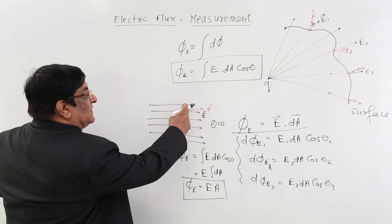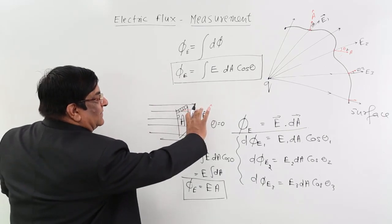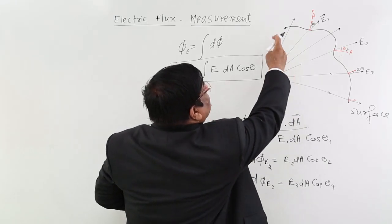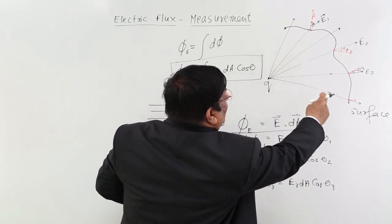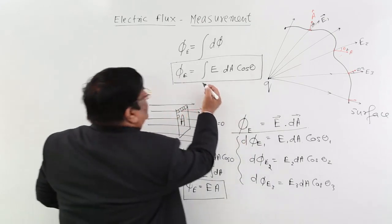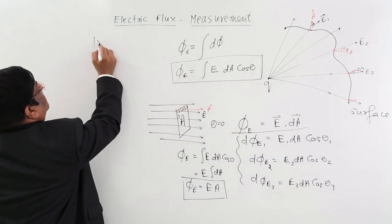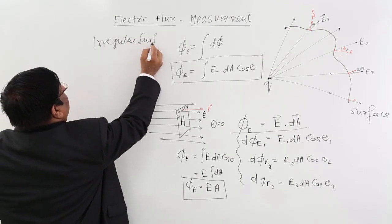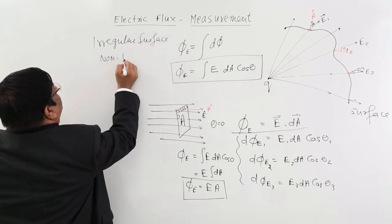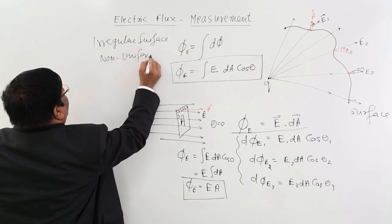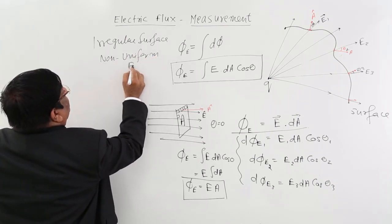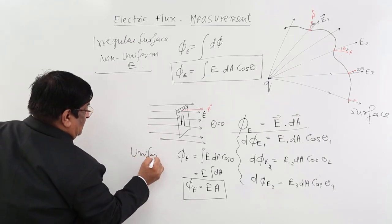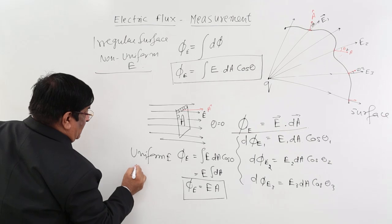If regular surface, uniform electric field. If electric field is non-uniform and the surface is also irregular, then this formula. So this is for irregular surface and non-uniform E. This is uniform E and regular surface.